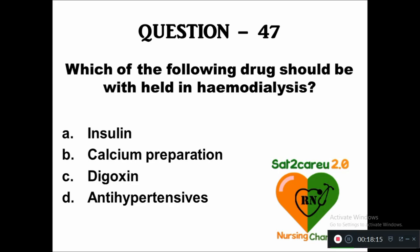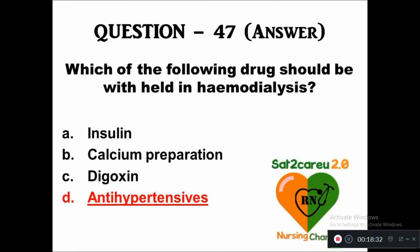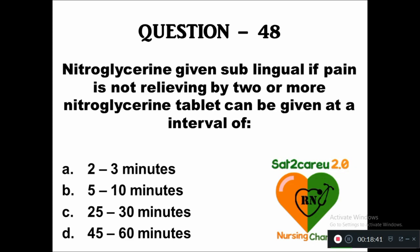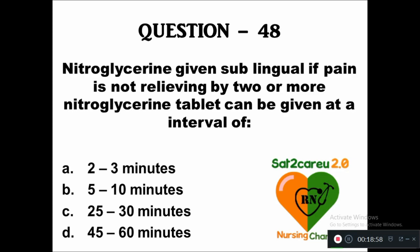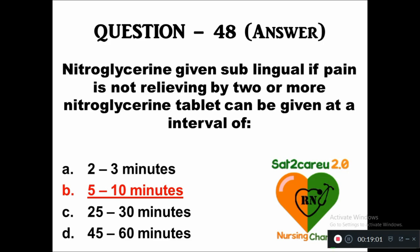Question 47: Which of the following drugs should be withheld in hemodialysis — option A: insulin, B: calcium preparation, C: digoxin, D: antihypertensives. The right answer is antihypertensives should be withheld when the patient is undergoing hemodialysis. Question 48: If pain is not relieving with two or more nitroglycerin tablets, the next dose can be given at an interval of — option A: 2 to 3 minutes, B: 5 to 10 minutes, C: 25 to 30 minutes, D: 45 to 60 minutes. The right answer is 5 to 10 minutes.